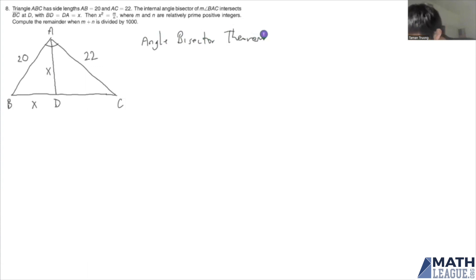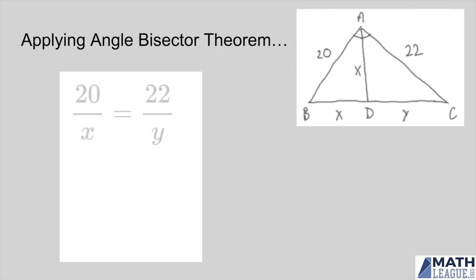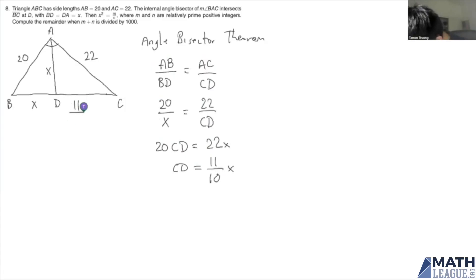we see that AB over BD equals AC over CD. Plugging in our values, 20 over X equals 22 over CD, so CD equals 11 over 10 times X, and we fill that in our diagram.